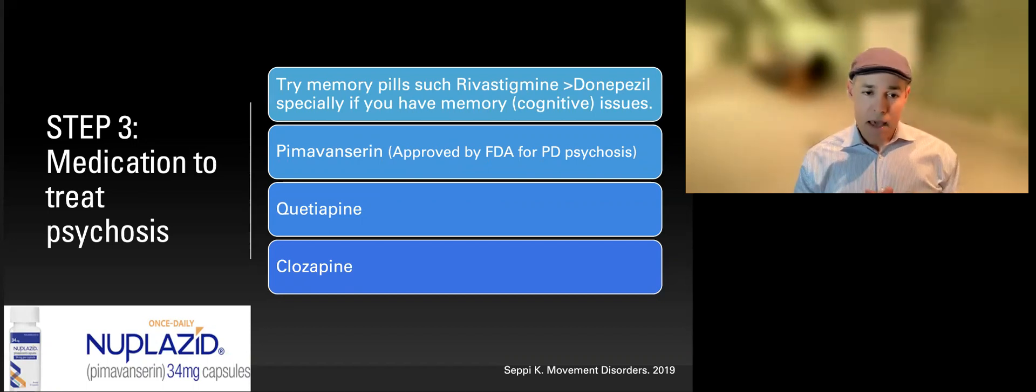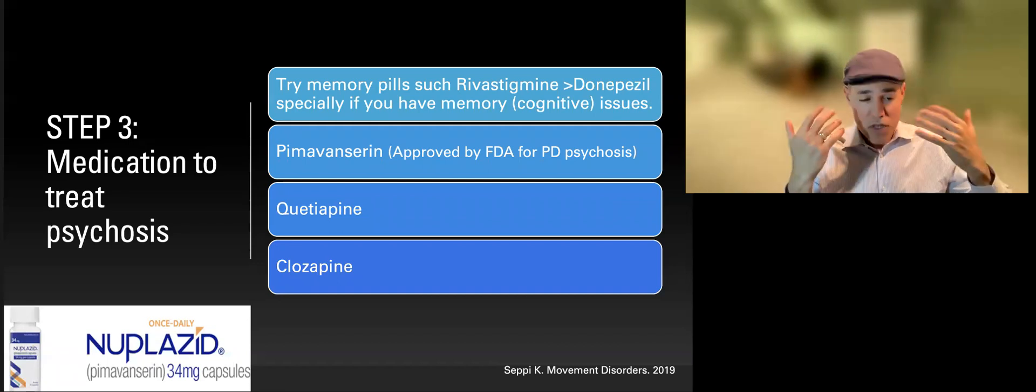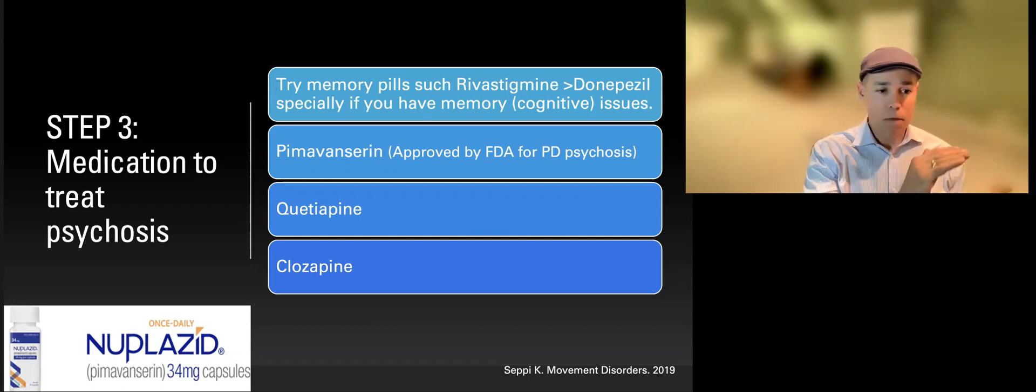The other one that might be more effective than Seroquel is clozapine. However, clozapine has a problem. Approximately one percent of patients might end up having what we call agranulocytosis, which is having very low white blood cell count, predisposing you to have very severe infections. So you have to be careful. Those patients need to be monitored—we need to monitor CBC, white blood cell count—frequently, very frequently, especially during the beginning of the process. So this is not that easy treatment, but it tends to be pretty effective as well.